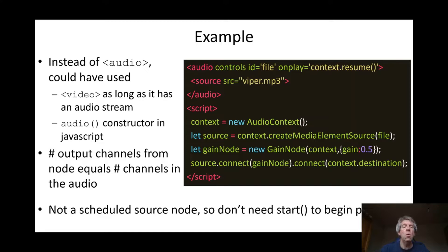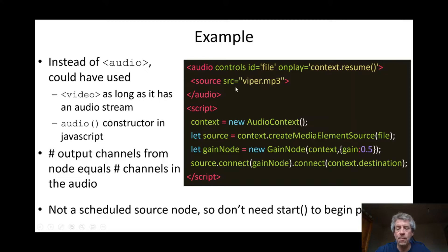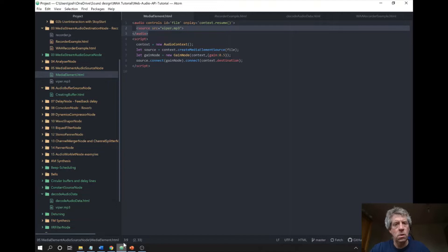Note that the number of output channels from the node equals the number of channels in the audio. So if the file — in this case viper.mp3 — was in stereo, this creates a stereo output from the node for use in the audio graph. Also note that the MediaElementAudioSourceNode is not a scheduled source node — you don't need a start method; the start is controlled by the audio element itself.